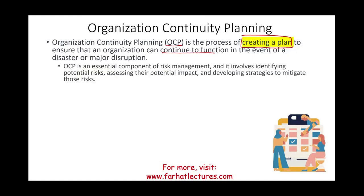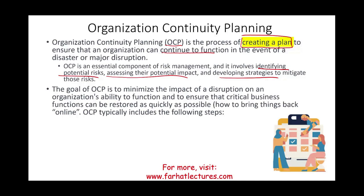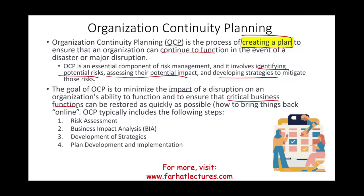The overall goal is to minimize the impact of disruption on your organization, specifically the critical business functions, and restore those as soon as possible — getting back online and up and running, the sooner the better. OCP typically involves the following steps: first, risk assessment; second, business impact analysis; third, development of strategies; fourth, plan development and implementation; and fifth, testing and maintenance. I'm going to go through each of these separately.